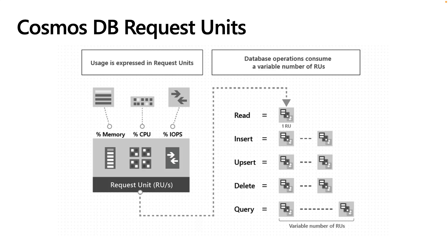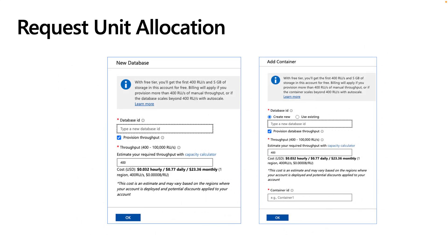Request units are allocated at either the database level or the container level. Provisioning at the container level provisions dedicated RUs for that container. Provisioning at the database level allows us to share RUs across containers in the database, up to a maximum of 25 containers. It's worth pointing out that shared provisioning does not have any resource governance applied, meaning I cannot set minimum and maximum consumption targets for containers participating in shared throughput. This means containers are susceptible to noisy neighbor problems.